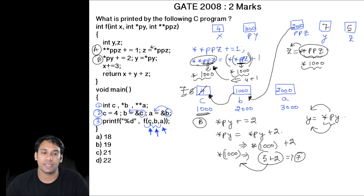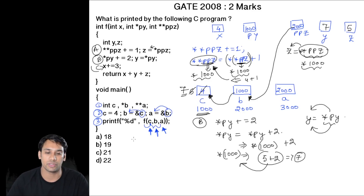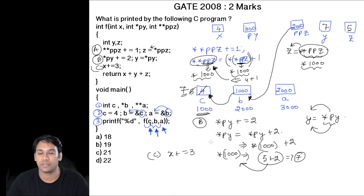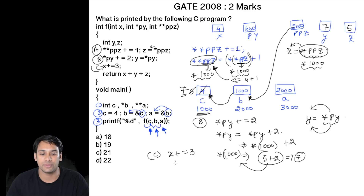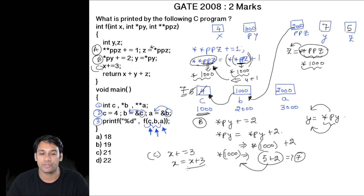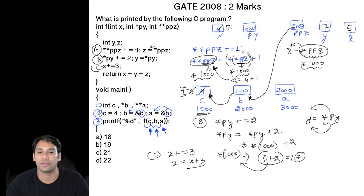In statement c, we are having x += 3, which means we are going to increment the value of x by 3. This can be written as x = x + 3. The value stored in variable x is 4, and after incrementing by 3, this value will become 7.